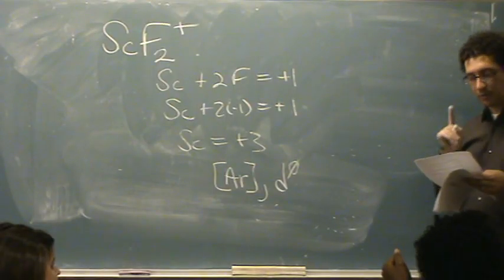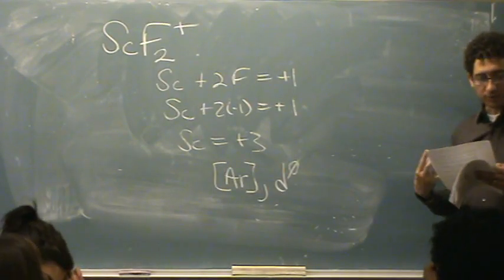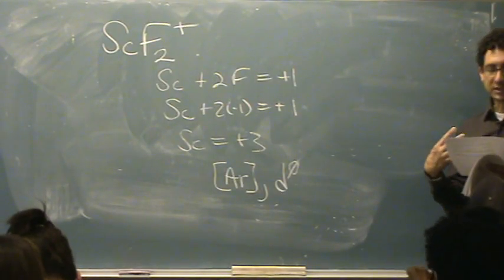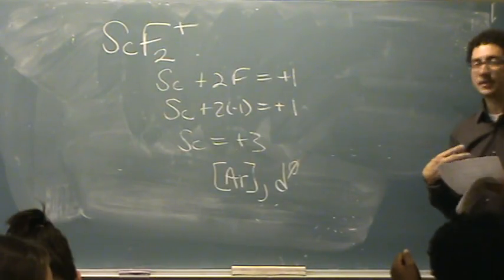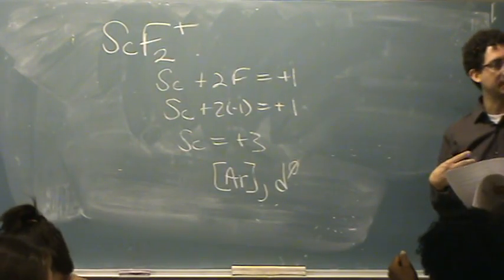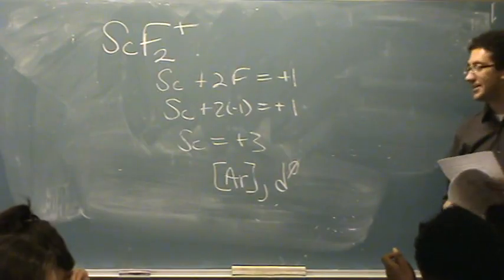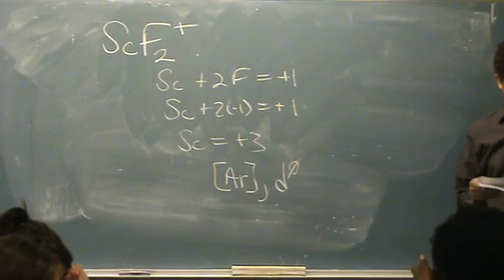And there is one mistake in this problem, which is irrelevant to the problem. But the question says it's orange. That's incorrect. It can't be orange. What color is this? It's colorless. It's a d0. But it didn't affect the question at all.